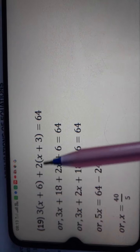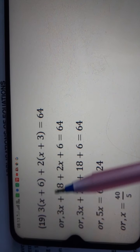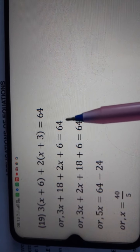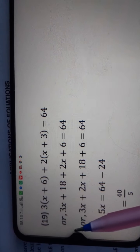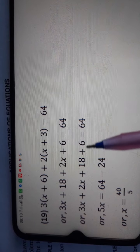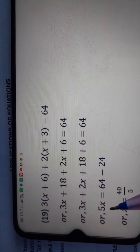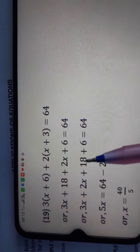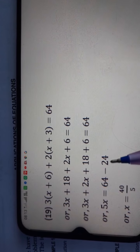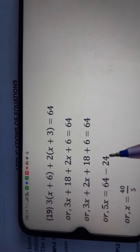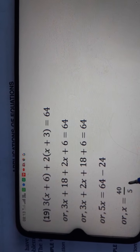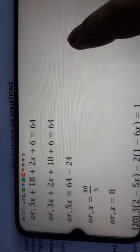Question number 19: 3(x plus 6) plus 2(x plus 3) is equal to 64. Opening brackets: 3x plus 18 plus 2x plus 6 is equal to 64. Collecting x terms: 3 plus 2 gives 5x. Collecting constants: 18 plus 6 is 24. Changing side: 64 minus 24 is 40. Dividing 40 by 5 gives x is equal to 8.